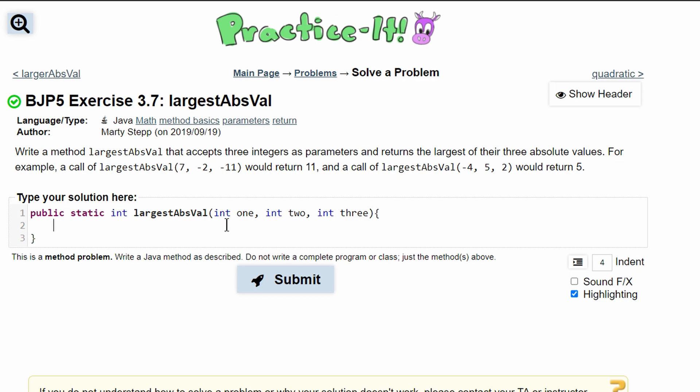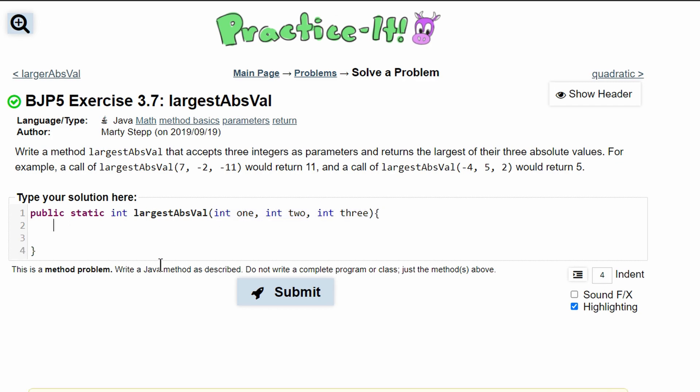So we need to compare all of these and see which one is the largest and return it. First, we can only compare two because in our comparing method we are going to use Math.max, and that can only take two parameters.